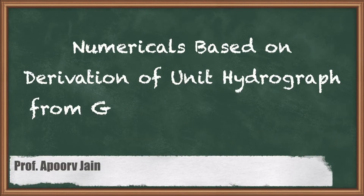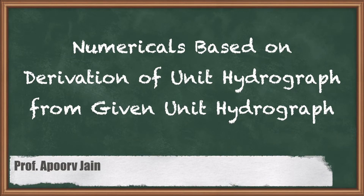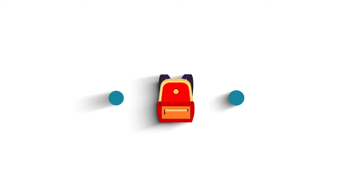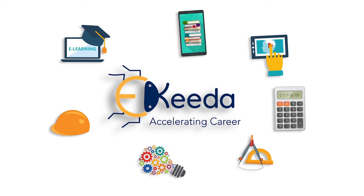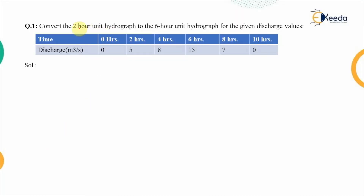Hello everyone. In this video we are going to solve numericals based upon the derivation of the unit hydrograph from the given unit hydrograph. The first problem says: convert a 2-hour unit hydrograph to a 6-hour unit hydrograph for the given discharge values at different time durations.